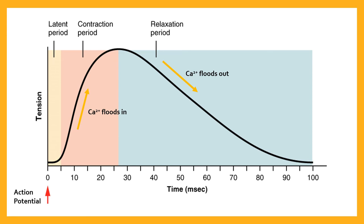So we have three phases: the latent period, the contraction period, and the relaxation period. Now the important question is: what happens if we get another impulse quickly after the initial impulse?